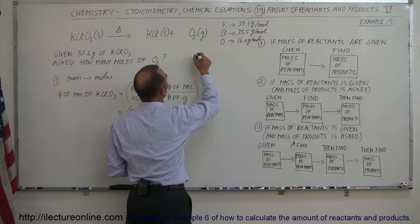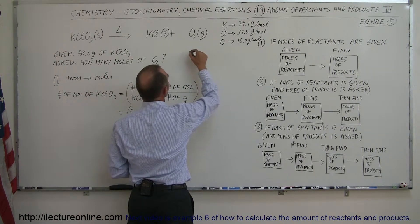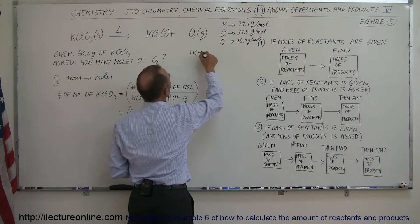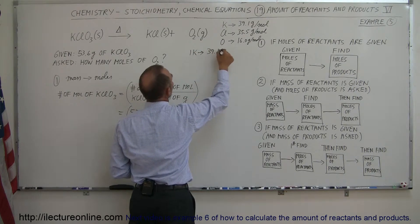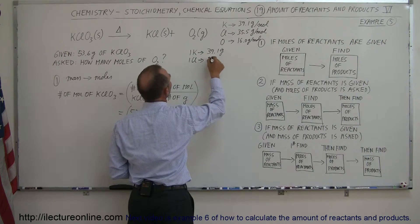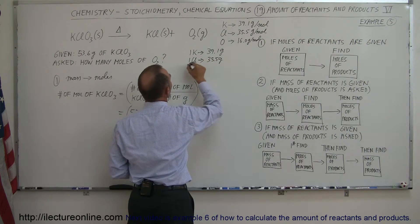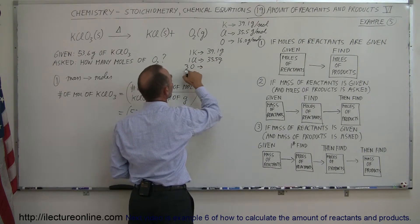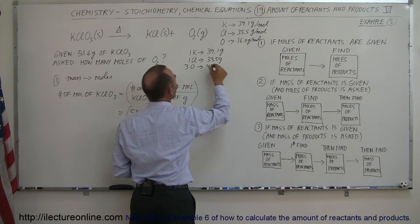so the total molar mass, we need to take one potassium. So one potassium, which gives us 39.1 grams. One chlorine atom, which gives us 35.5 grams. And three oxygen atoms, which is 3 times 16, or 48 grams.